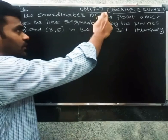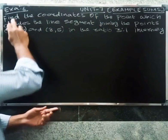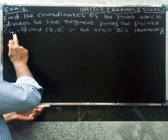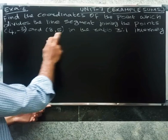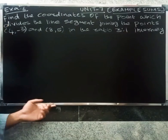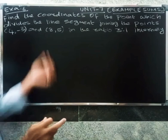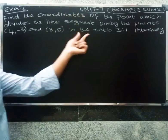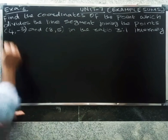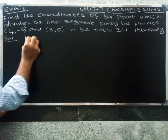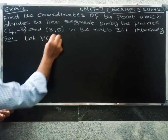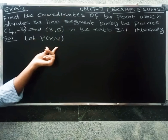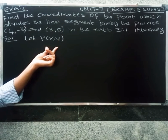Welcome friends. This is Unit 7, Example 6. Find the coordinates of the point which divides the line segment joining the points (4, -3) and (8, 5) in the ratio 3:1 internally. We will use the section formula to find the coordinates.